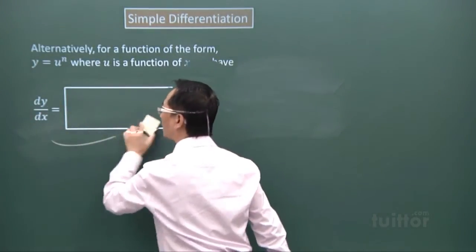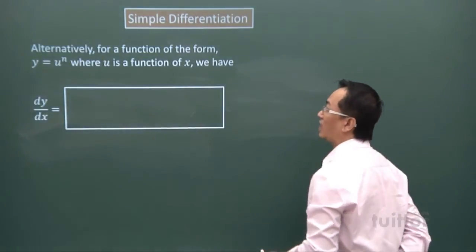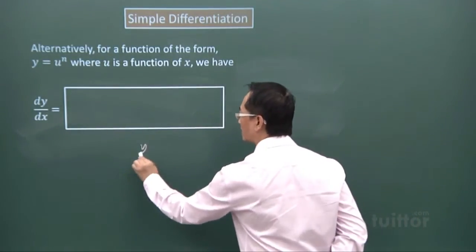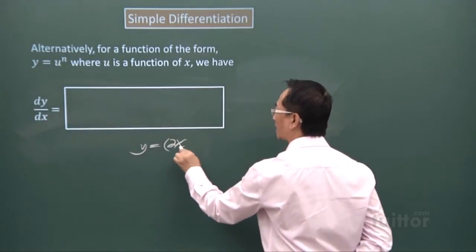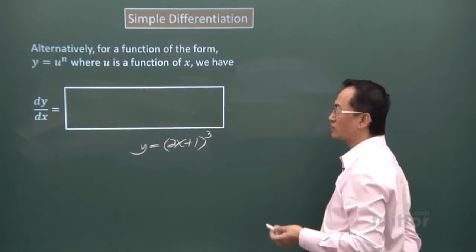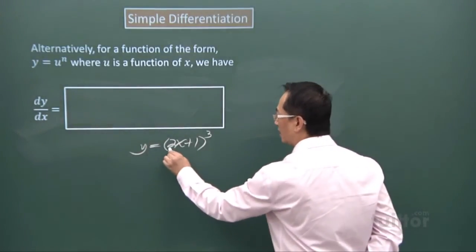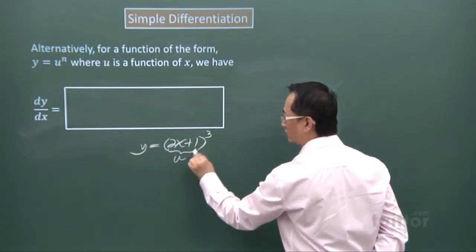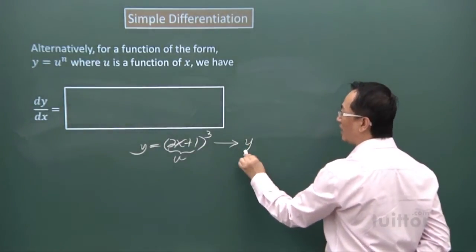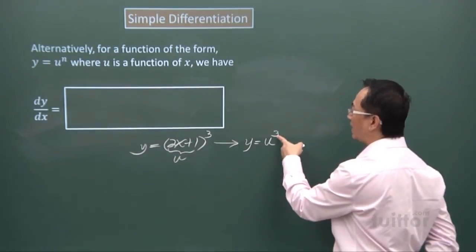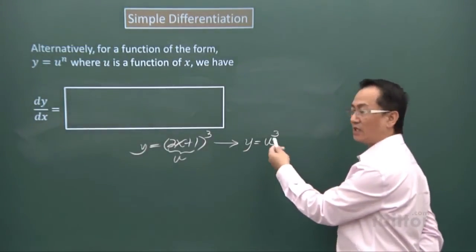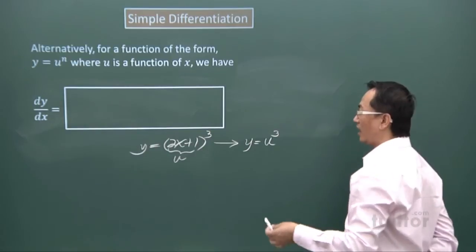But for the application of chain rule, what sort of questions would you expect? Whenever you get questions like sine bracket 2x plus 1 to the power of 3, that will require you to use the chain rule. If you take this as u, then we are back to the same situation where you have y equals u to the power of 3, where 3 corresponds to the n here. So that actually requires the use of the chain rule.